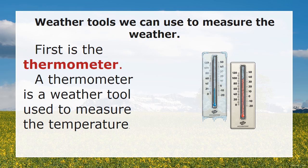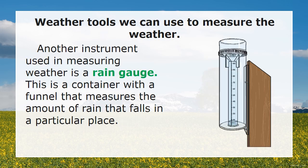Let's talk about the weather tools that the meteorologist uses. First, we have the thermometer. A thermometer is a weather tool used to measure temperature. Another instrument used in measuring weather is a rain gauge — a container with a funnel that measures the amount of rain that falls in a particular place.